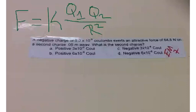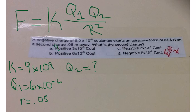For this equation, we are using F equals K times Q1 times Q2 over R squared, where K equals 9 times 10 to the 9, Q1 equals 6 times 10 to the negative 6, Q2 is our unknown, and R equals 0.05.